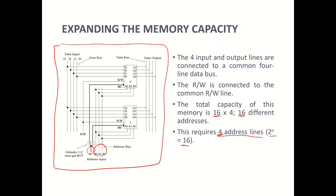One additional address line is used to select the memory chip, because now you have two chips. To select which chip to use, you need either a decoder or a NOT gate. A NOT gate can be used here because you only have two values — either 0 or 1 — so the NOT gate can function as the device that selects the memory chip.